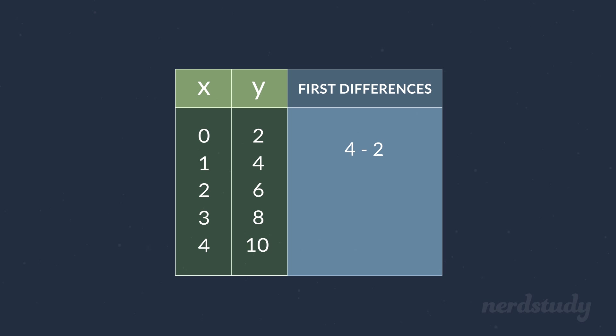So actually computing this gives us the first difference of two for this row. Notice how we place the difference in between these two y values to show that this number is the difference between them.